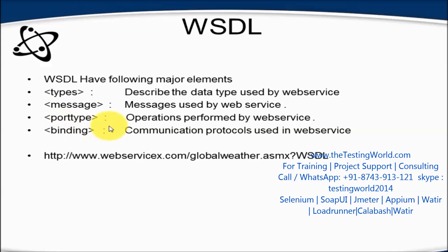Port Type lists the different operations supported by the web service. For example, a web service may support validating an address as one operation, cleaning an address as a second operation, or for weather information: providing today's weather as one operation and forecasting tomorrow's weather as a second operation. Binding describes the communication protocol used in the web service.